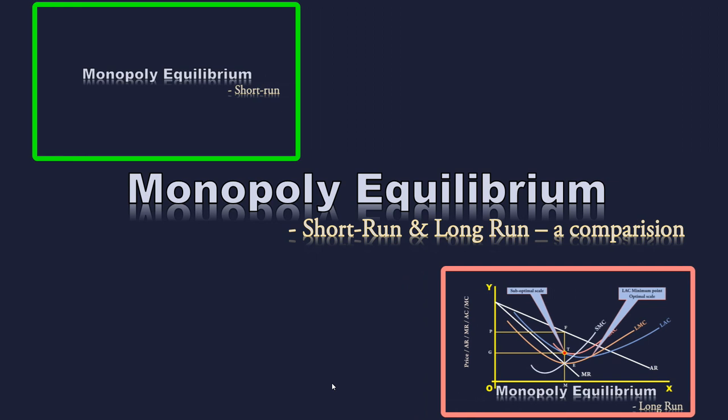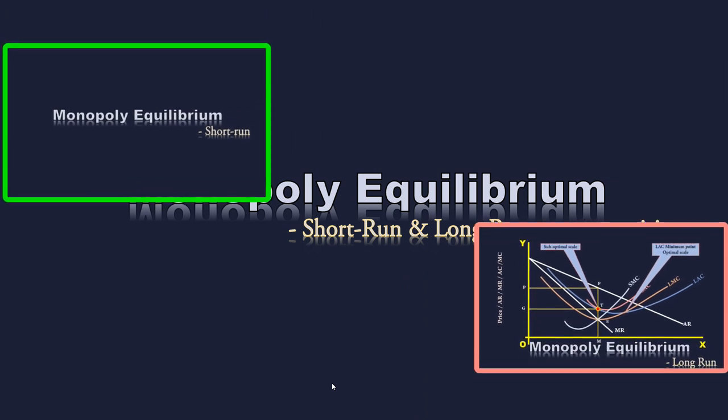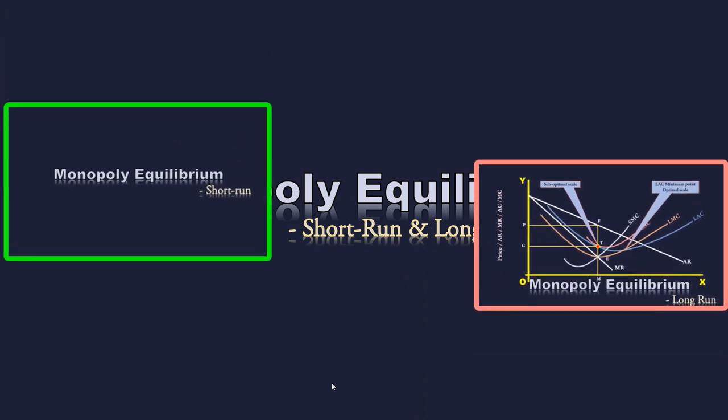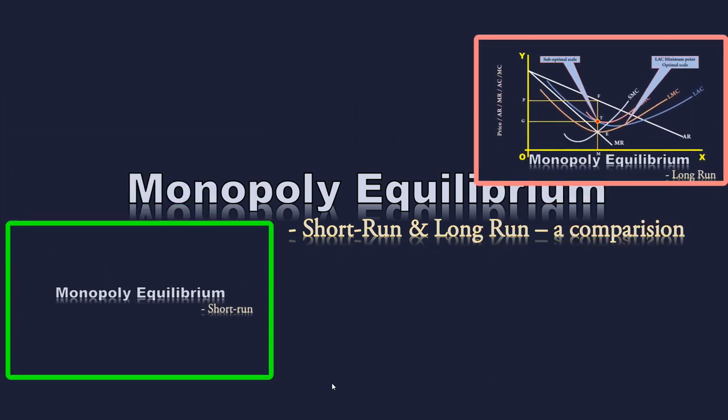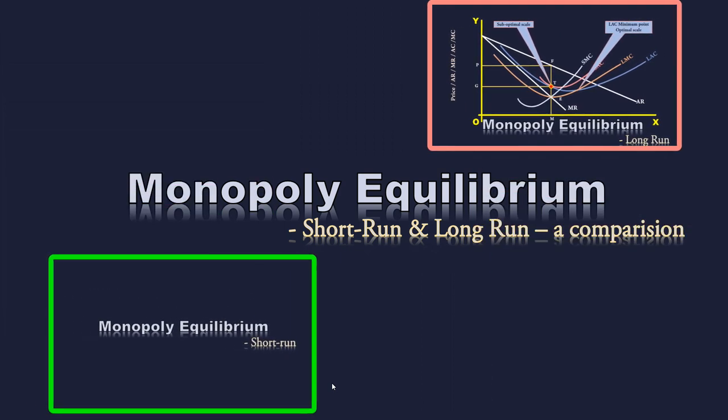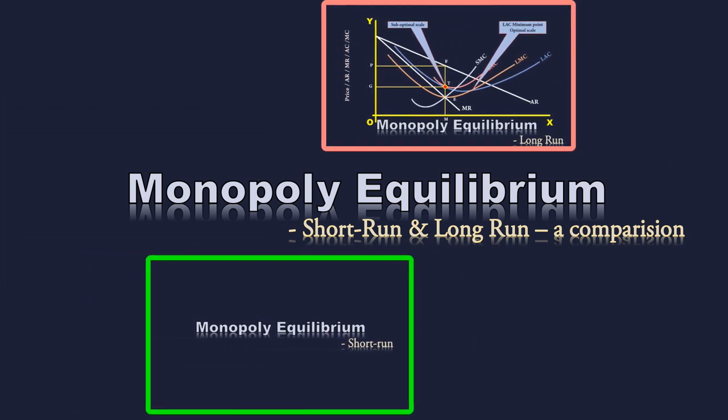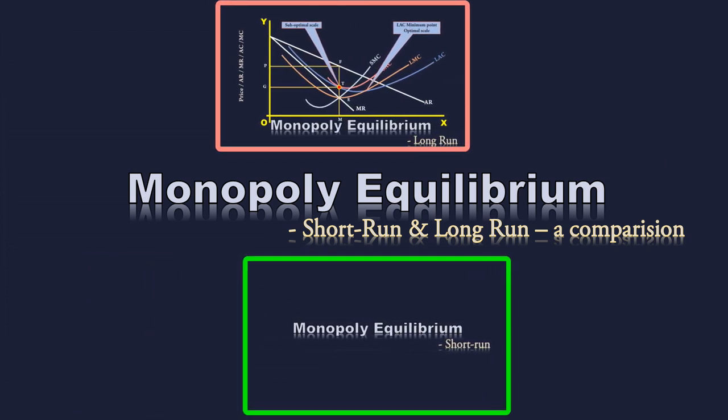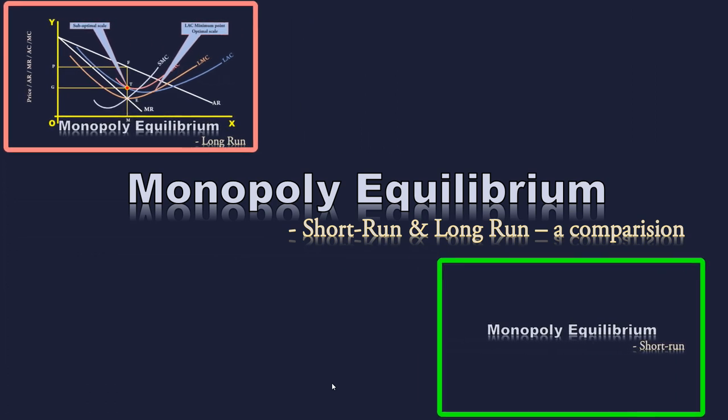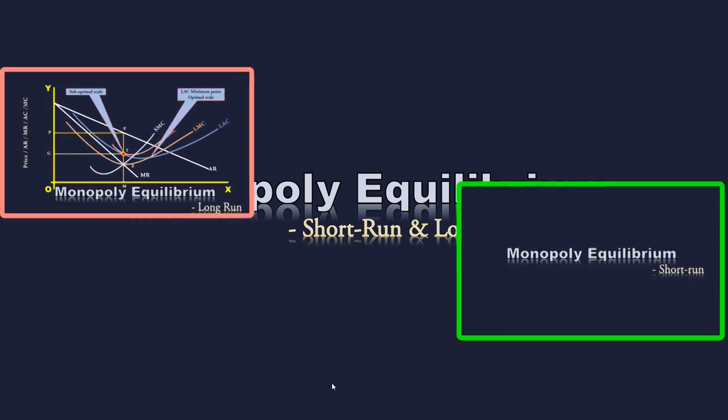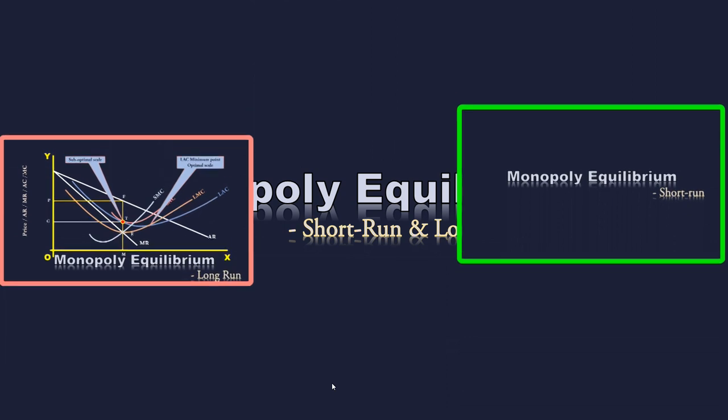The links are given in the description. In this work, we shall compare these two equilibrium. The aim of the monopoly firm, both in the short-run and long-run, is one of maximizing profit. But there are some differences between these two equilibriums.